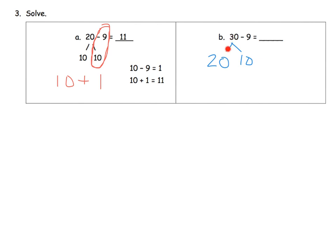So really all we did was we took 30 and broke it up into two parts, 20 and 10. And the purpose of that is 10 minus 9 is really easy for us to do. So 10 minus 9 is 1. So now we have 20 plus 1. This is equal to 21.